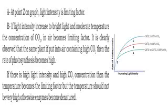We should not raise the temperature too much, because too much temperature causes denaturation of enzymes, which will negatively affect the photosynthesis process. So the three factors — intensity of light, moderate temperature, and carbon dioxide gas concentration — are the factors that affect the rate of photosynthesis.